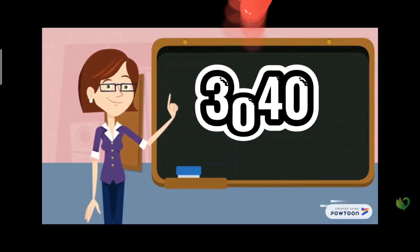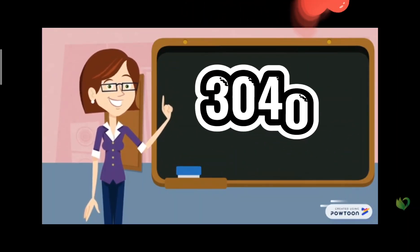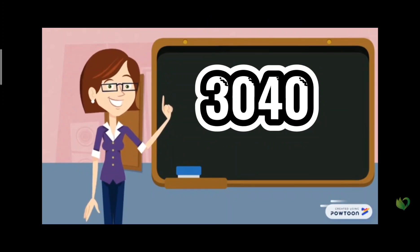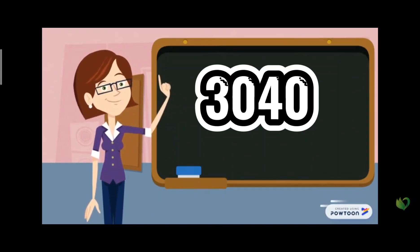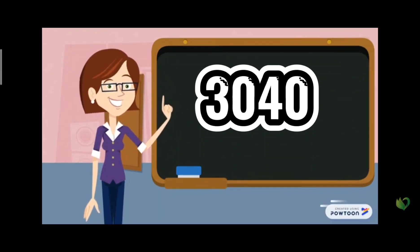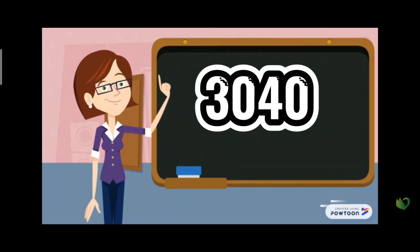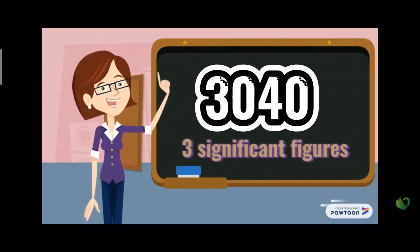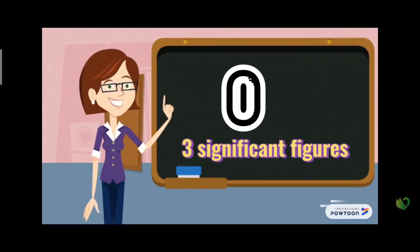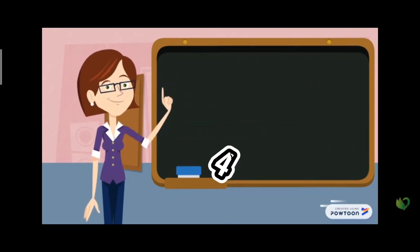For number two, how many significant figures does it have? We don't have a decimal point, so we cannot count the trailing zero. But the zeros in between non-zero numbers we can count. Therefore this number has three significant figures.